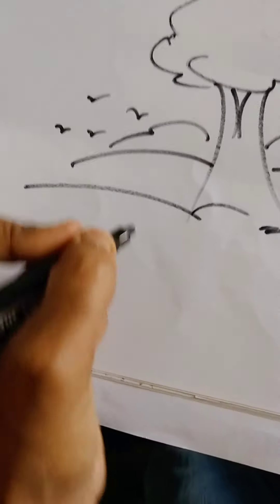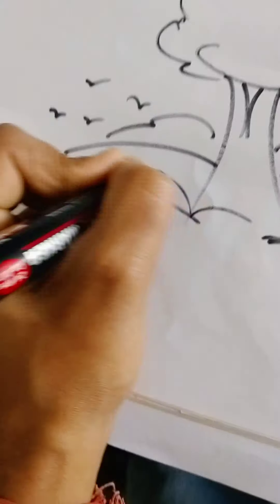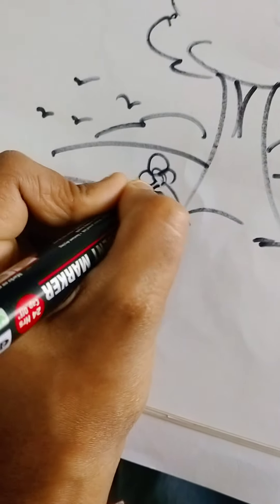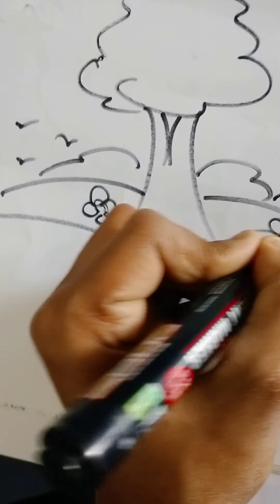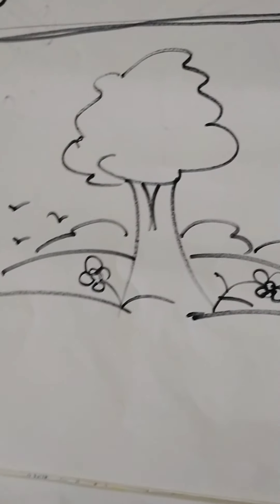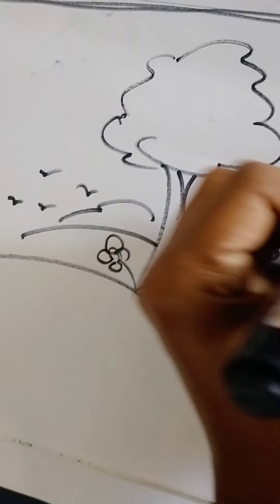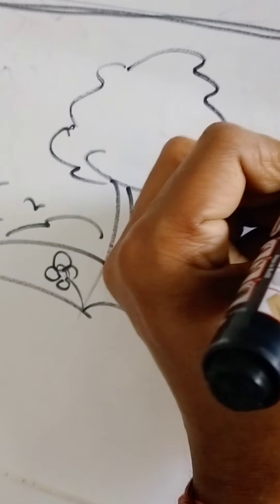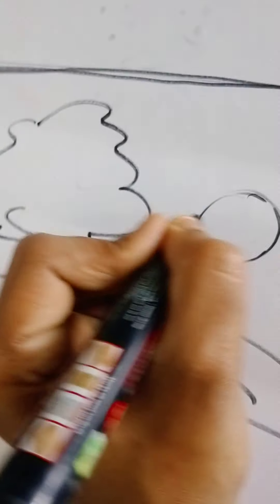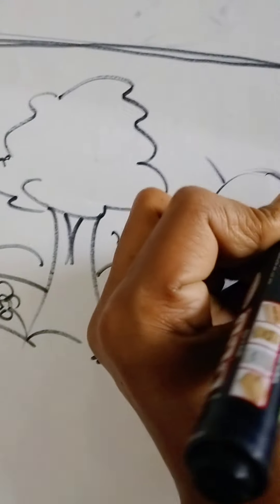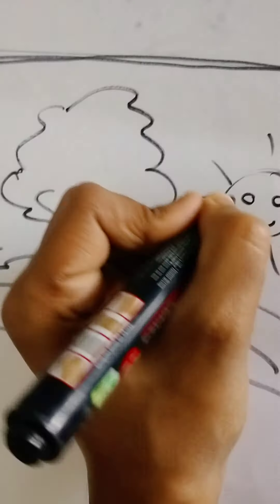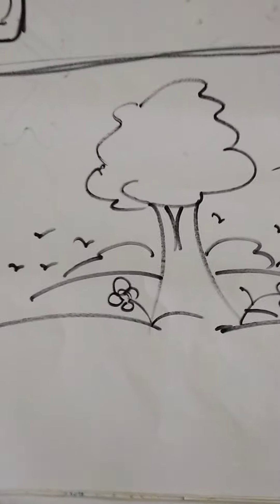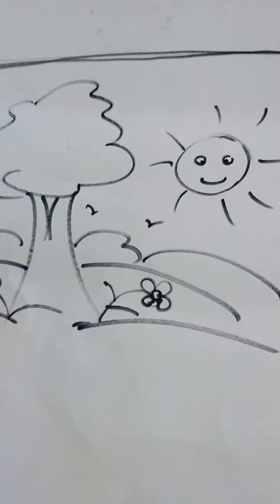And this is, wow. Flower. Sun. And this is a tree. This is a sun. This is a valley.